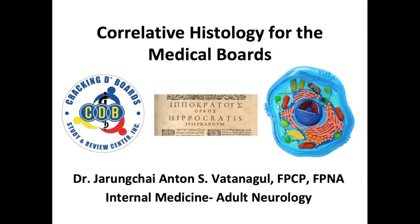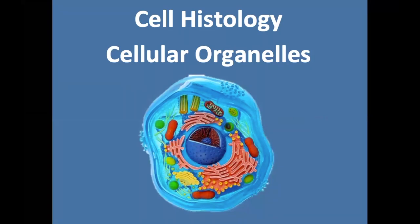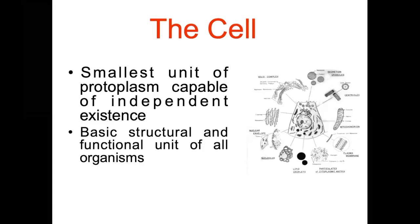Welcome to the ECDB online review. This is a module on correlative histology for the medical boards. I'm Dr. Toome and I will be your guide. References used include Bloom & Fawcett's Textbook of Histology, Clinical Anatomy by Regions by Richard Snell, and Clinically Oriented Anatomy by Moore et al. We'll be covering basic pearls and must-knows for licensure examinations on cell histology, cellular organelles, apical and cell surface modifications, and basics of epithelium.